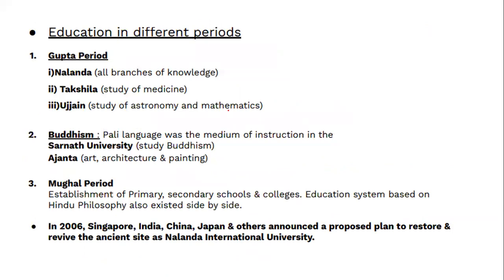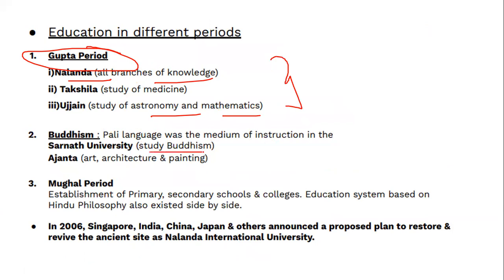Education in different periods: In the Gupta period, Nalanda covered all branches of knowledge, Taksila focused on medicine, and Ujjain on astronomy and mathematics. In the Buddhist period, Pali language was the medium of instruction; Sarnath University studied Buddhism; Ajanta displayed art, architecture, and painting. During the Mughal period, establishment of primary, secondary schools and colleges started. In 2006, Singapore, India, China, Japan, and others announced a proposed plan to restore and revive the ancient site as Nalanda International University.